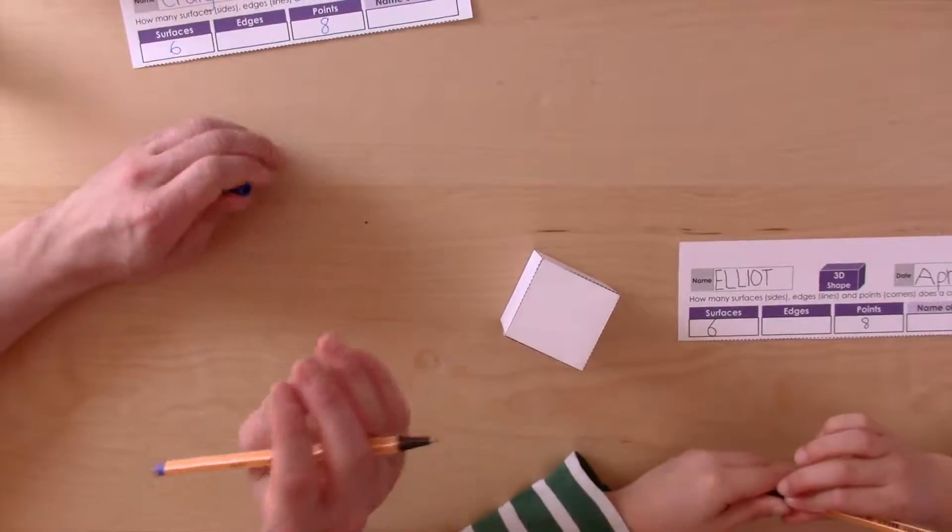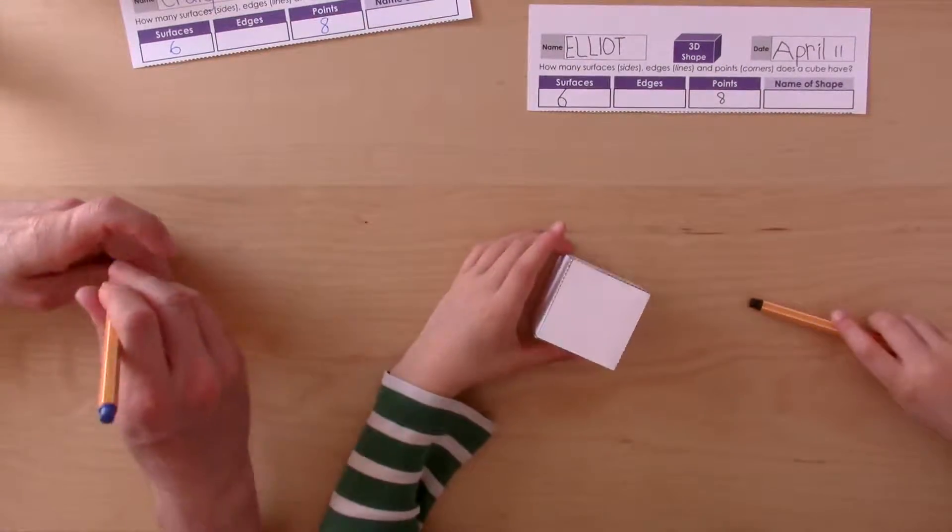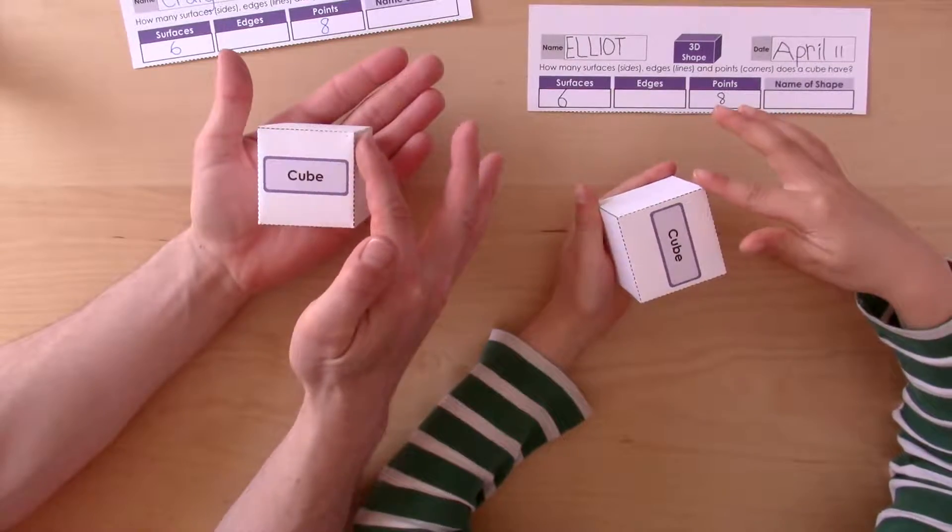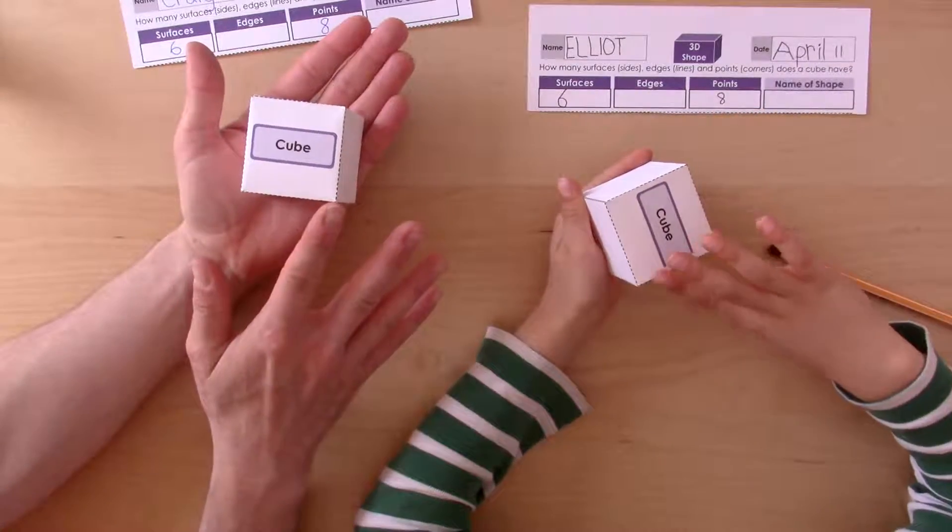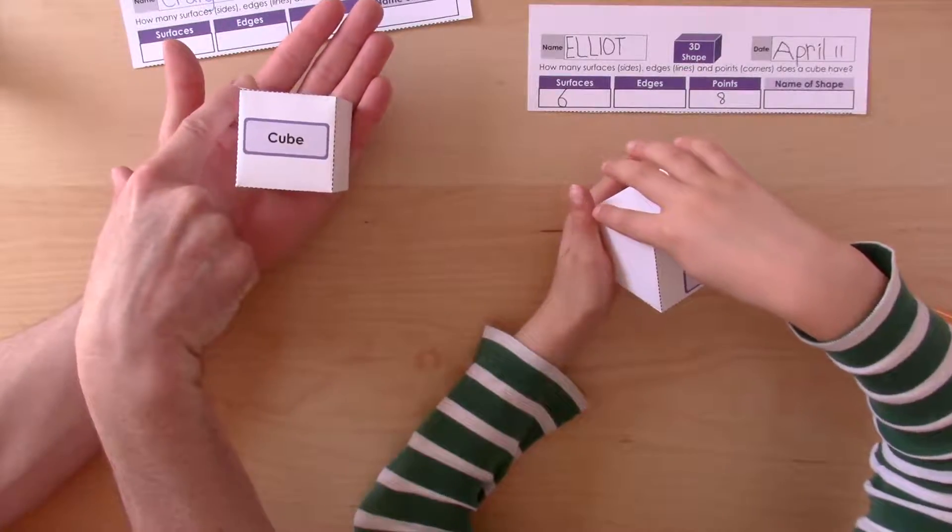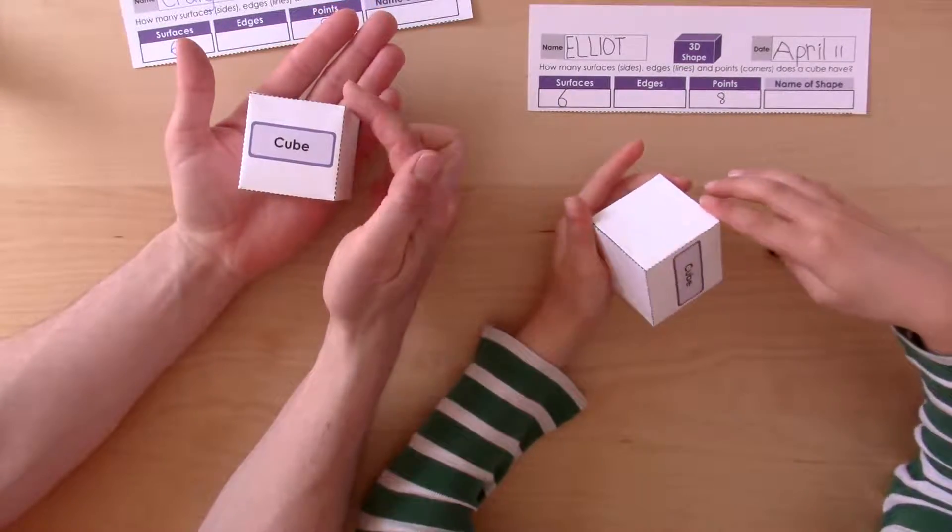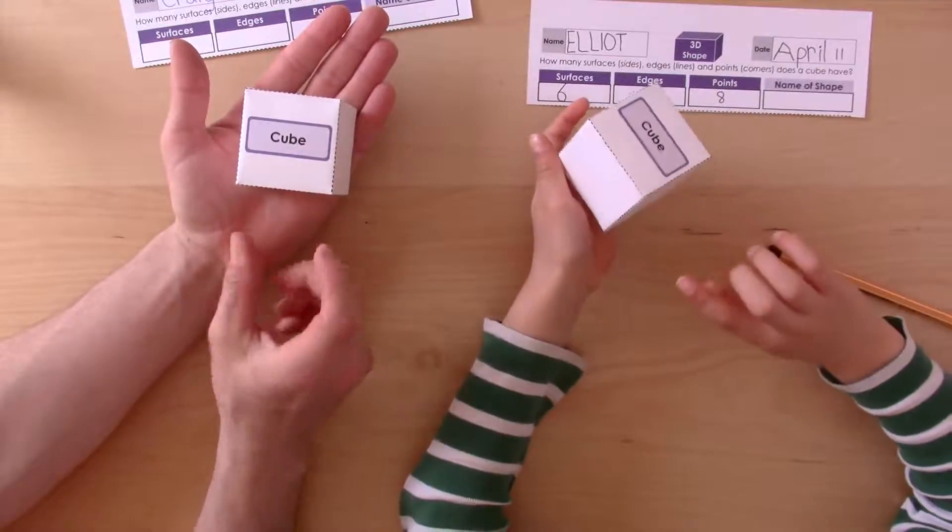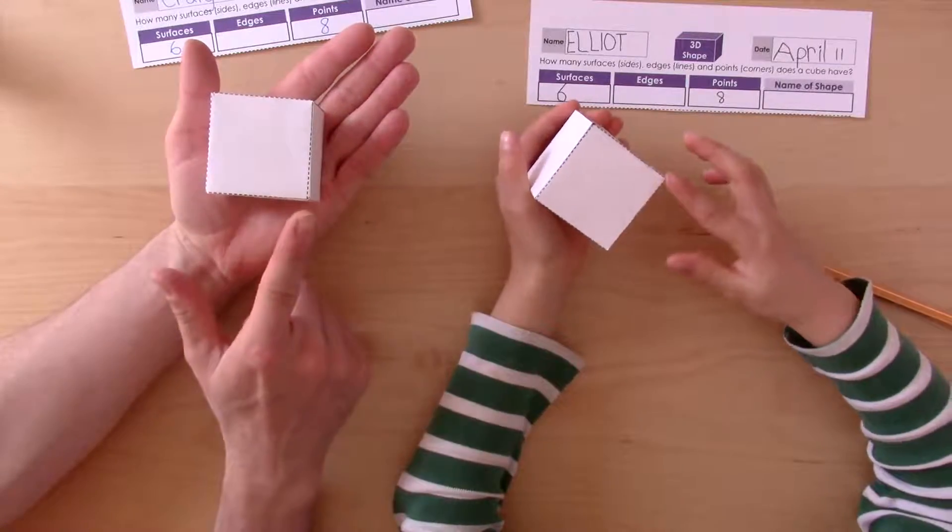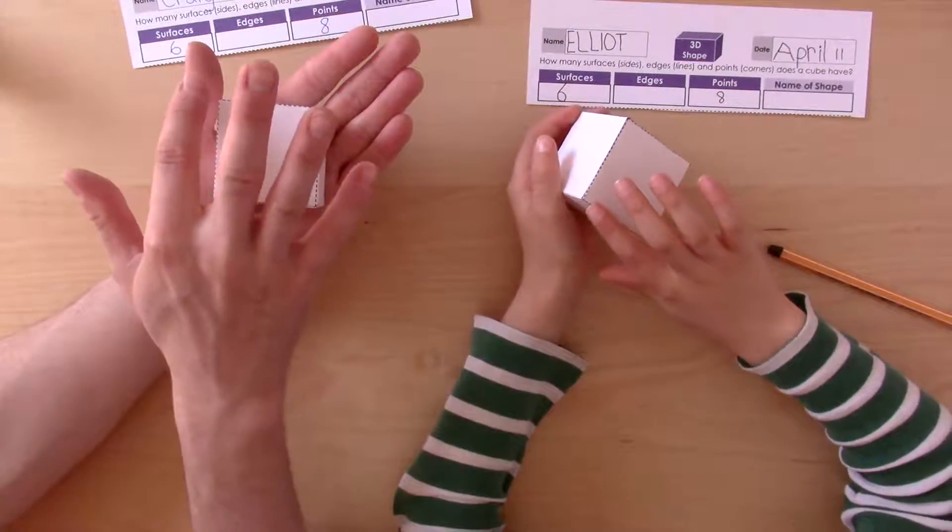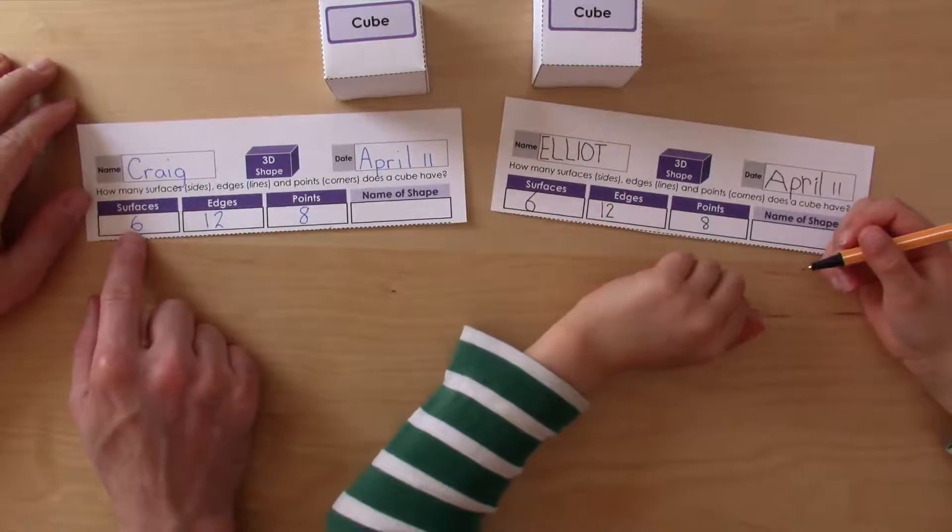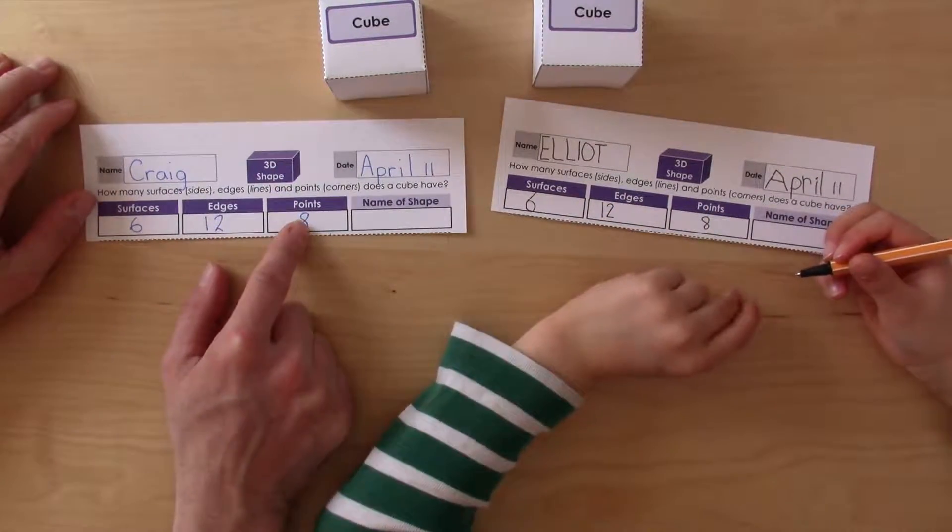Okay, and then the final one is the edges. Ready? One, two, three, four, five, six, seven, eight. And now turn it over. Nine, ten, eleven, twelve. Okay Elliot, so we've got six surfaces, twelve edges and eight points.